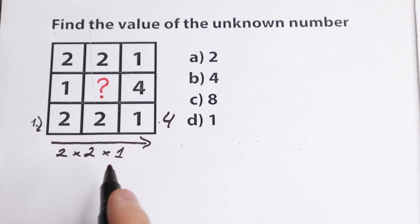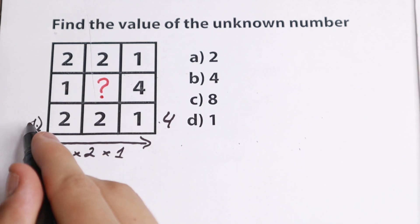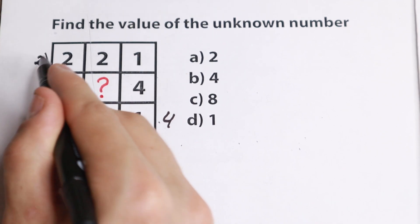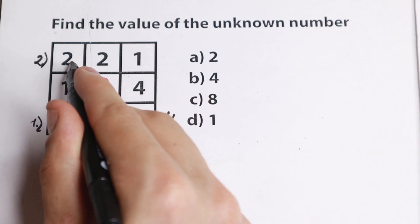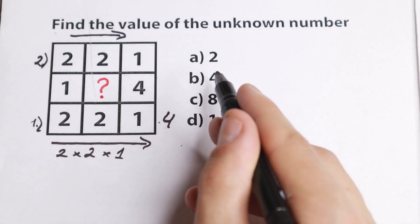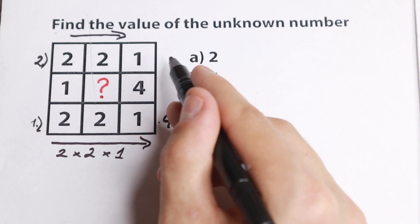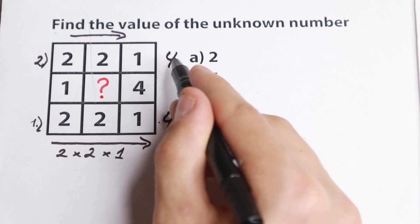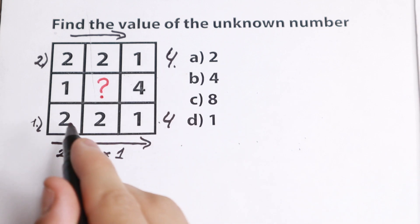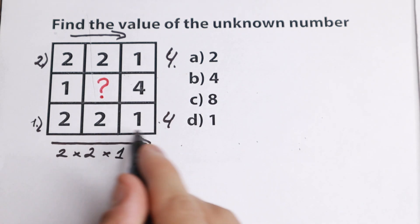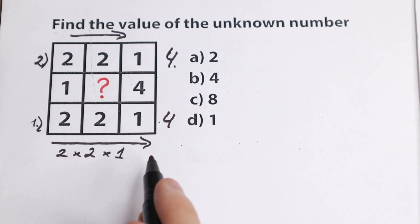And let's multiply our second line. If you multiply 2 times 2 times 1, in this way we will have 2 times 2 is 4, 4 times 1, we will have 4. So as you can see, it looks like we have the same product in first line and in the second line.